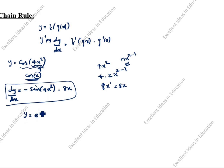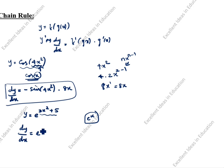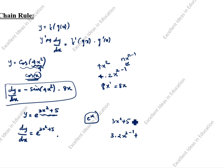Next chain rule example: y = e^(3x²+5). dy/dx: differentiation of e^x is e^x, so write e^(3x²+5) as is, then multiply by differentiation of (3x²+5). 3 is constant, x² differentiates to 2x, so 3·2x = 6x; differentiation of 5 is 0. dy/dx = e^(3x²+5) · 6x. This is the answer.